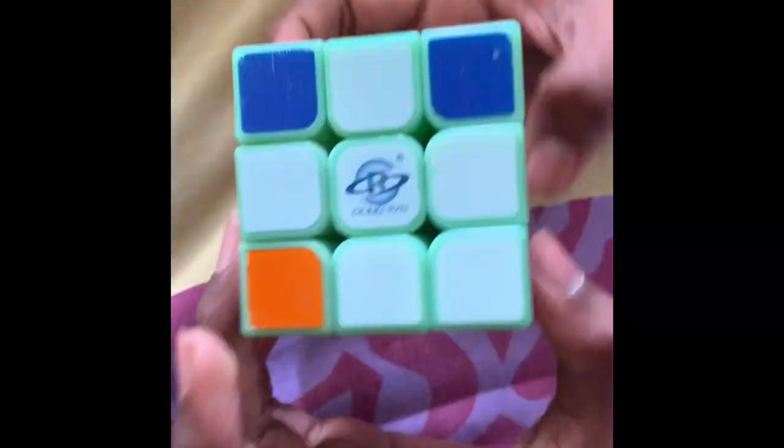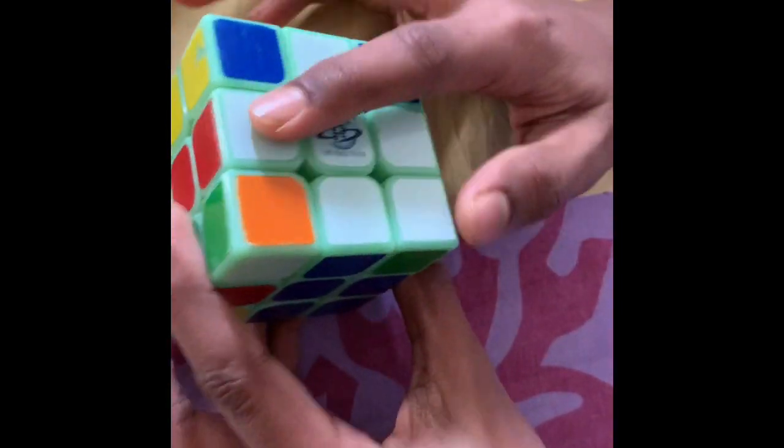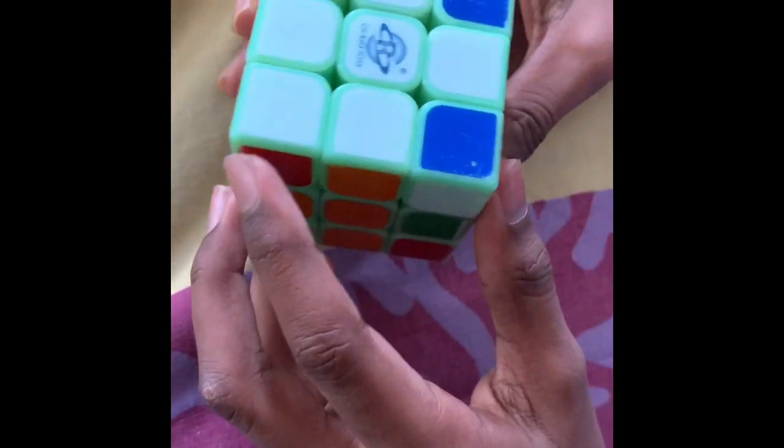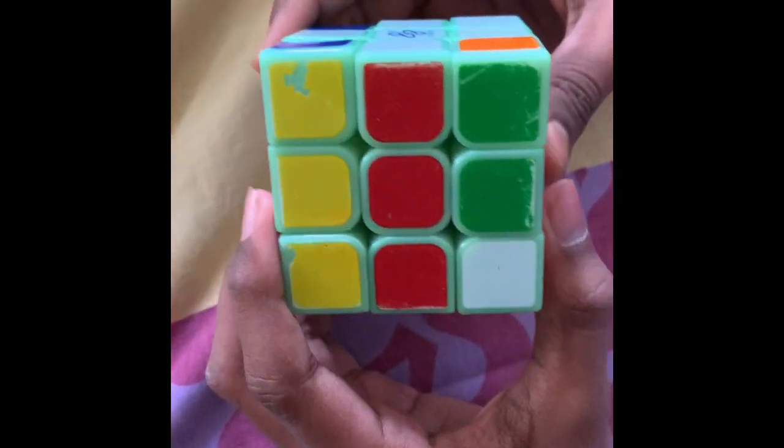You have to rotate two times on your right side. Now you can see it's a plus and the center colors are matching with the other sides. We've already solved some parts - white and the blue edge. Now you have to find the white corner pieces.